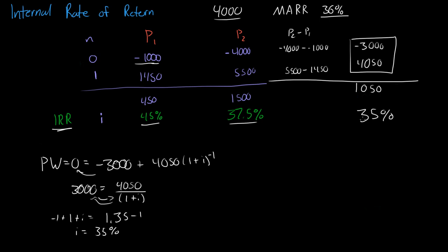This is 35%. So, if we went with project 1, we'd get a rate of return of 45%. That would leave us $3,000 to invest. And we can get a MARR of 36%. If we had $3,000 to invest, would we rather invest it in project 2 or invest it just somewhere else where we can get that 36%?